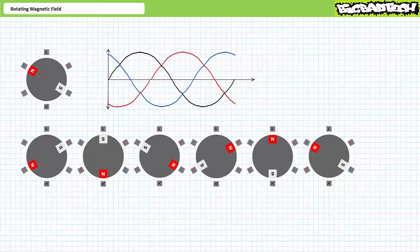Swapping two phase sequences results in the complete reversal of the rotating magnetic field. This method is often used in reversing motor starters — a type of bidirectional motor control circuit where a given phase sequence establishes forward operation and a different sequence establishes reverse. Swapping any two phases results in reversal regardless of which two you choose: L1 with L2, L2 with L3, or L3 with L1. So long as you only swap two, the field reverses.